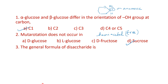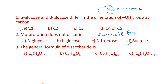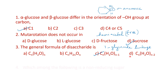The third question is on the general formula of disaccharides. It is a condensation reaction where one water molecule is removed. The general formula of carbohydrates is CₙH₂ₙOₙ. Since one water molecule is removed in forming a disaccharide (one glycosidic linkage), the formula becomes Cₙ(H₂O)ₙ₋₁, or equivalently C₂ₙH₄ₙ₋₂O₂ₙ₋₁ — straightforward from the condensation of two monosaccharide units.